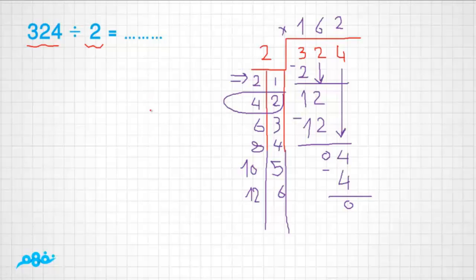So the quotient of 324 divided by 2 is 162.